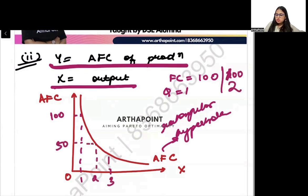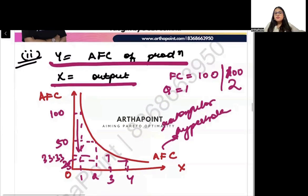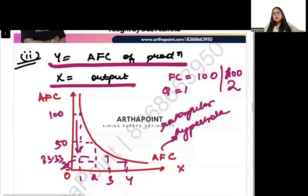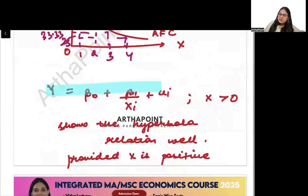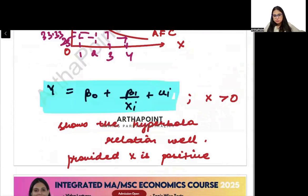Then 3, this will be 33.33, then 4, this will be 25. So fixed cost drastically falls, correct. Therefore we need a rectangular hyperbola, which means I need a reciprocal model. So I'm going to write Y equals beta 0 plus beta 1 over Xi.